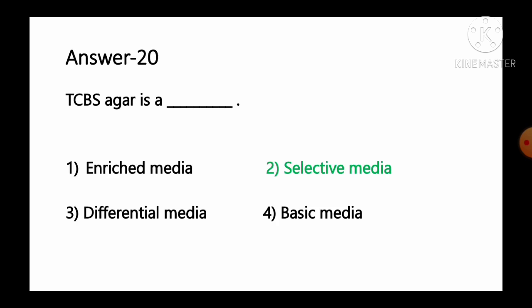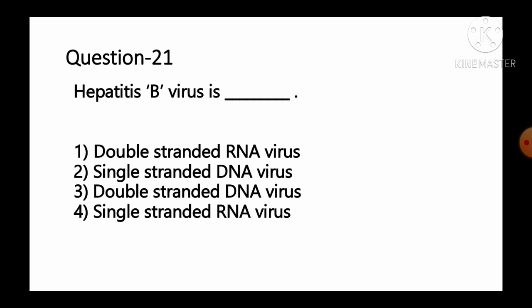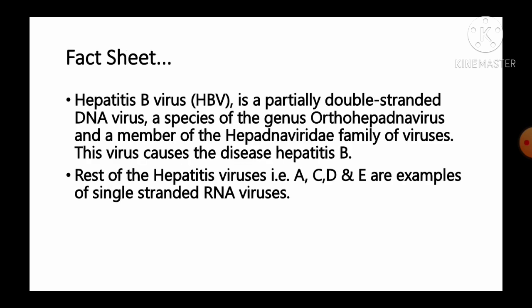Question number 21: Hepatitis B virus is a — option 1 double-stranded RNA virus, option 2 single-stranded DNA virus, option 3 double-stranded DNA virus, option 4 single-stranded RNA virus. Hepatitis B virus is a partially double-stranded DNA virus, a species of the genus Orthohepadnavirus and a member of the Hepadnaviridae family. The rest of the hepatitis viruses — A, C, D, and E — are examples of single-stranded RNA virus. So option number 3, double-stranded DNA virus, is the correct answer.